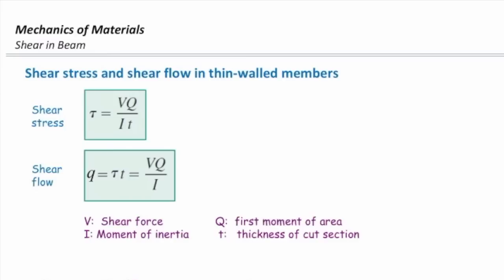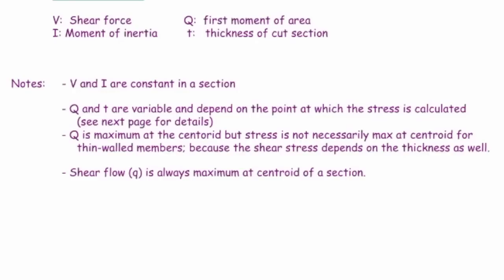To avoid that complication, I can use the shear flow concept. Because shear flow — which doesn't consider thickness — is always maximum at the centroid. That is another reason we sometimes use shear flow instead of shear stress. So shear flow is always maximum at the centroid, but this is not the case for shear stress in thin-walled elements. Shear stress might be maximum in the horizontal element, the flange, instead of the web.